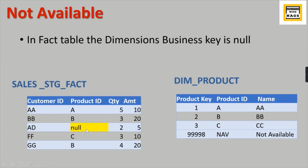To understand the difference between unknown and not available: the unknown member is something where the member does not exist in the dimension at all — C does not exist. Not available is something where the product ID, which is the key factor for sales, is not present at all as a value in the staging. You replace this null with a not available entry, then populate the fact. Both unknown and not available entries need to be manually inserted into your dimension tables.